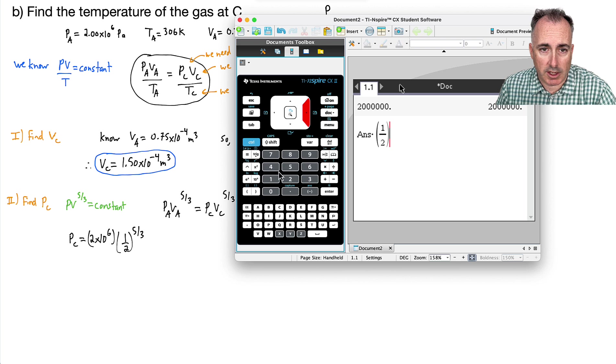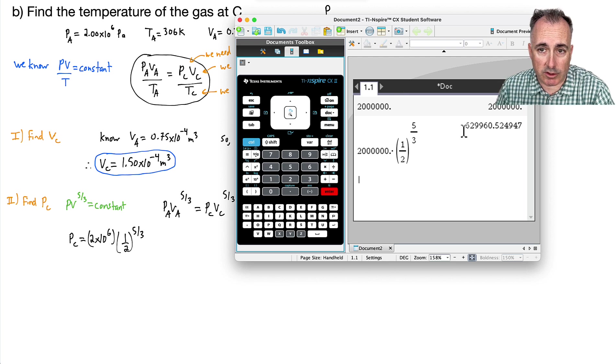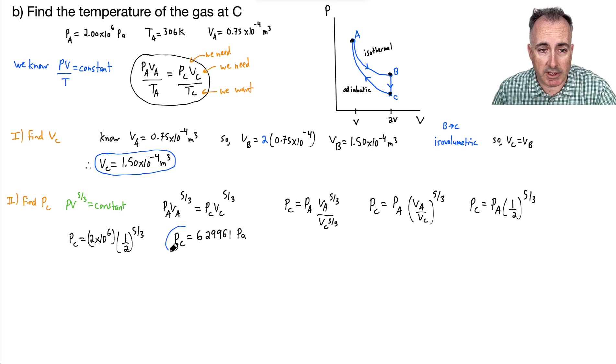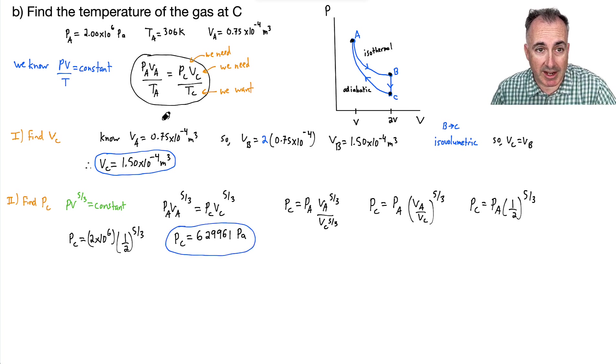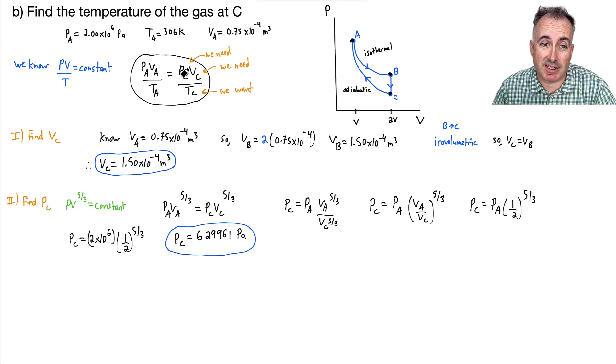I'm going to multiply that by 1 half to the power of 5 thirds. So let's see if I can do that on my trusty calculator. Let's see here. So I've got to do 2 times 10 to the 6. And all that is going to be times. And I'll say, well, I mean, I could just say 1 over 2. Or I could just say 0.5. All this to the power of, and I'll make another pretty fraction just to make sure it's clear. There we go. So I get this number here. So 6, 2, 9, 9, 6, 0.52, let's just say. Okay, so that's my answer for PC.